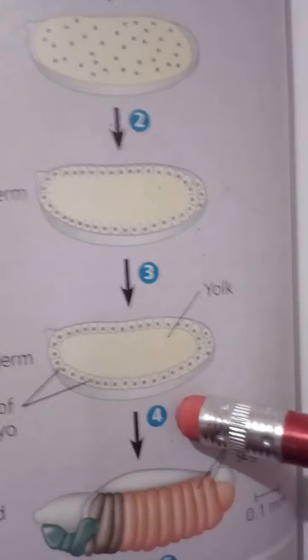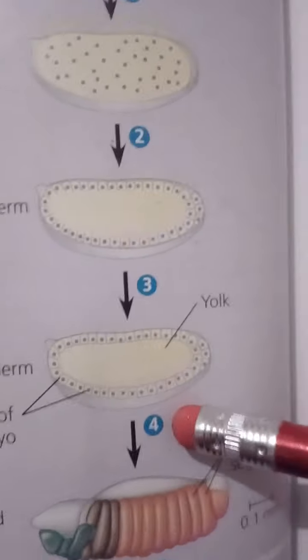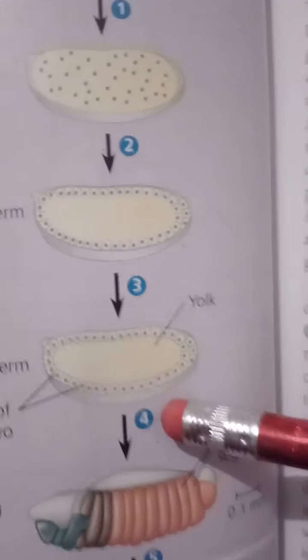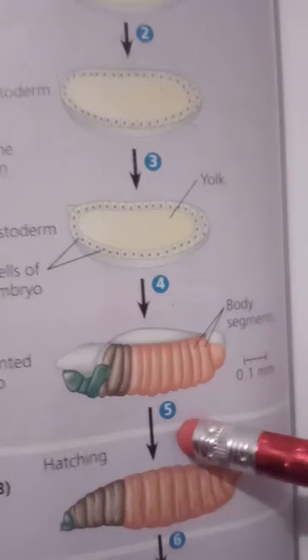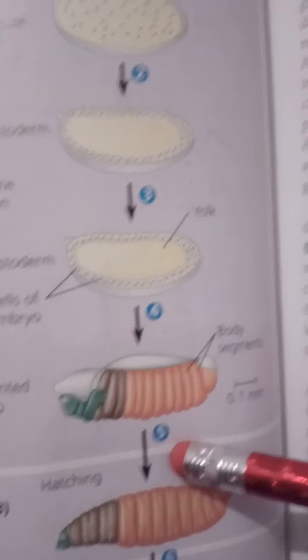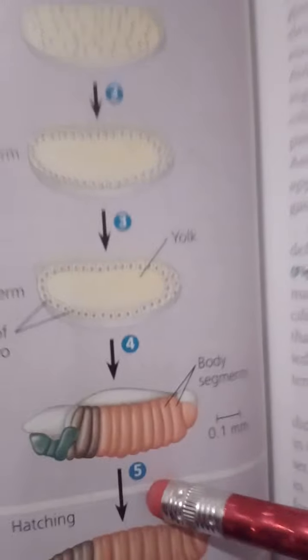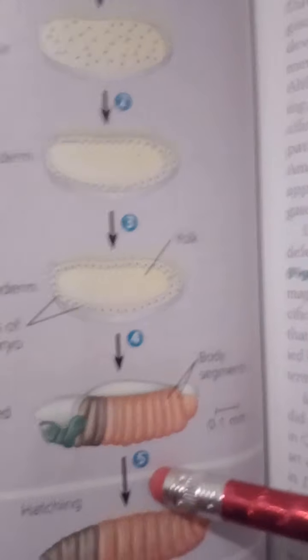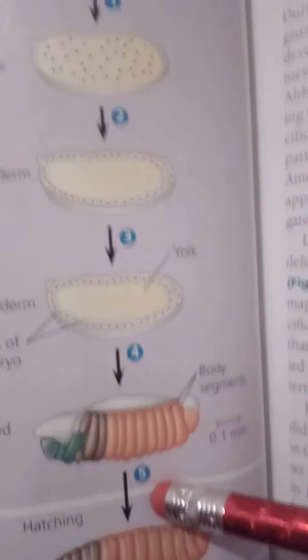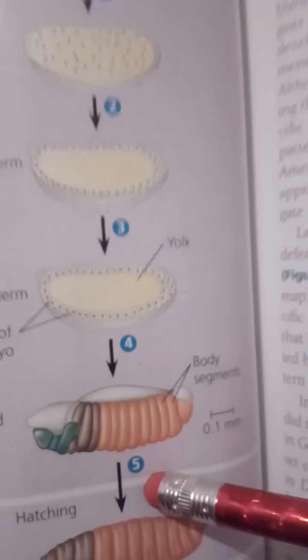At stage four, subsequent events in the embryo create clearly visible segments, which at first look very much alike. Then some cells move to new positions, organs form, and a worm-like larva — the juvenile form — hatches out of the shell.